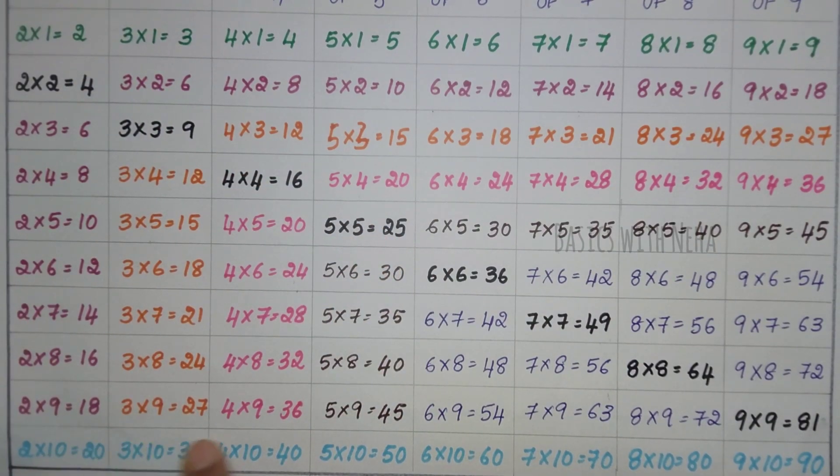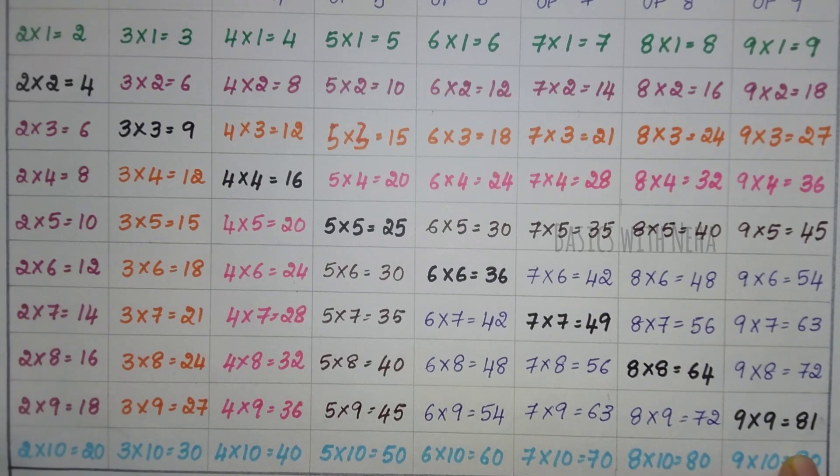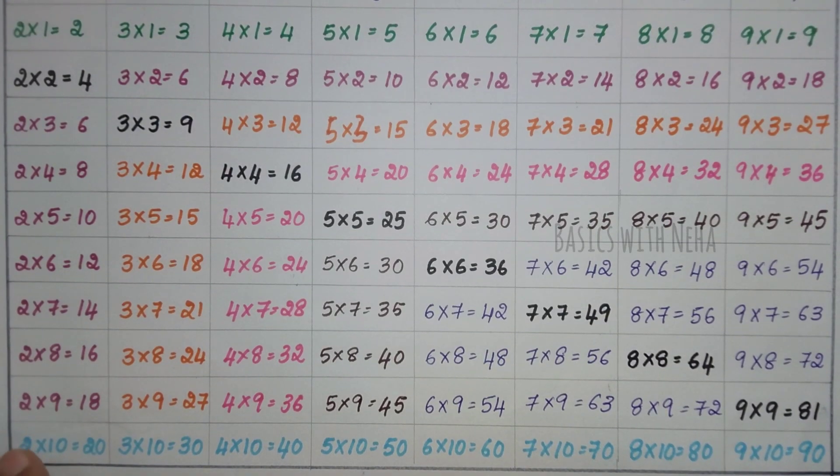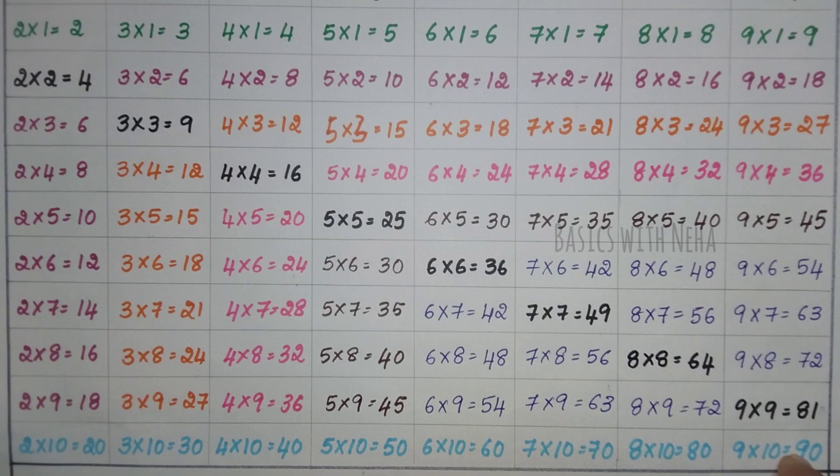And when you see this last line, it is multiple of 10. That is 10s table. 10×1s are 10, 10×2s are 20. Same thing: 2×10s are 20, 3×10s are 30, 4×10s are 40. If you do it the other way, 10×5s are 50, 10×6s are 60, 10×7s are 70, 10×8s are 80, 10×9s are 90, 10×10s are 100.